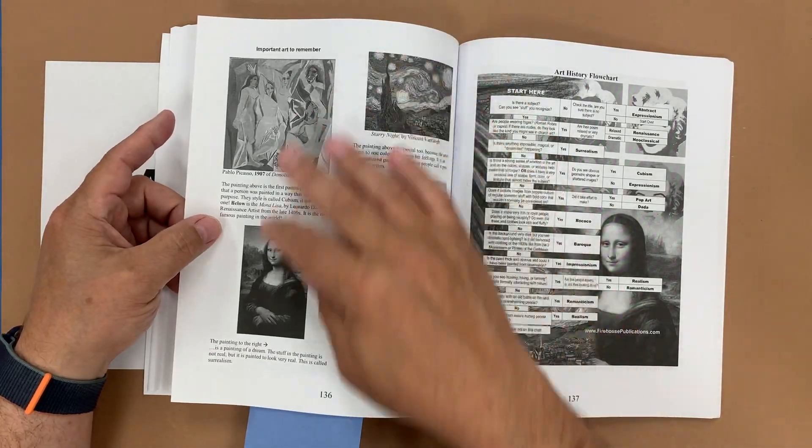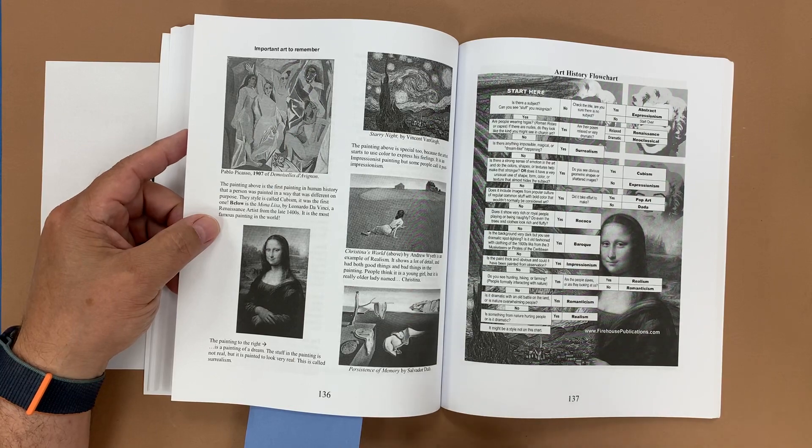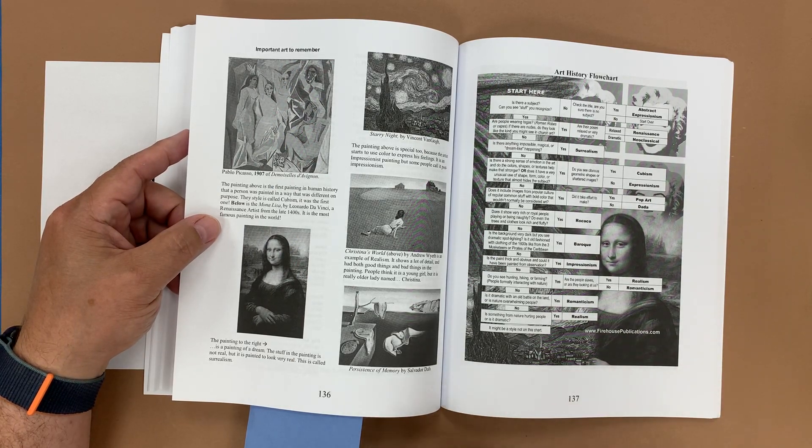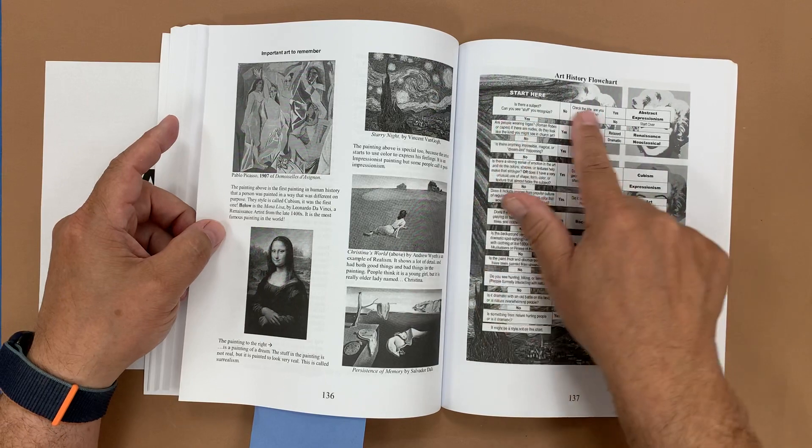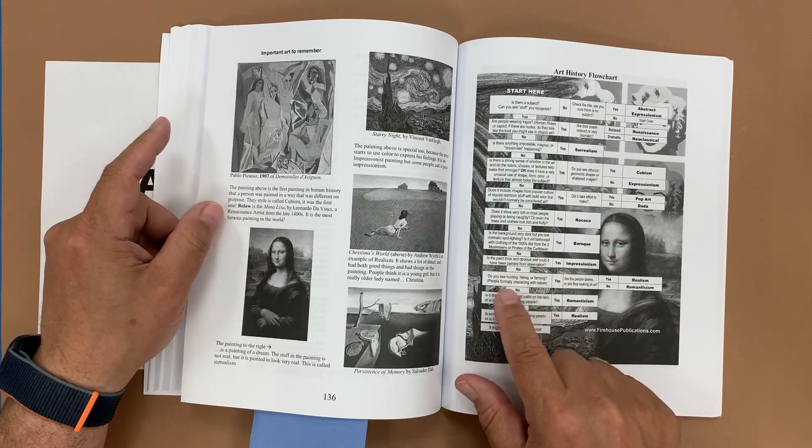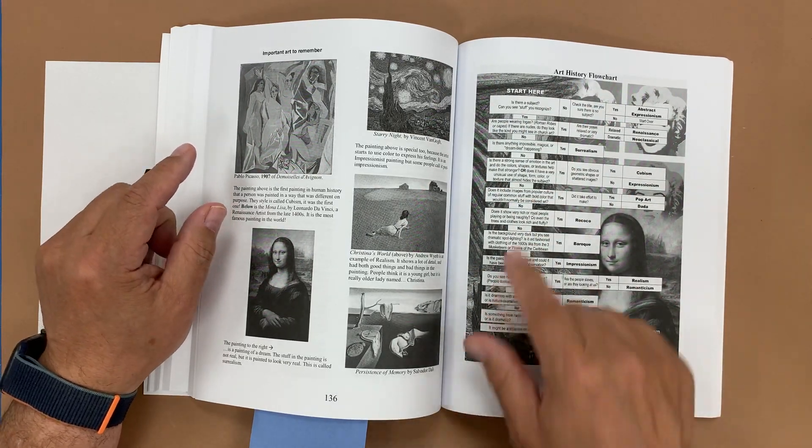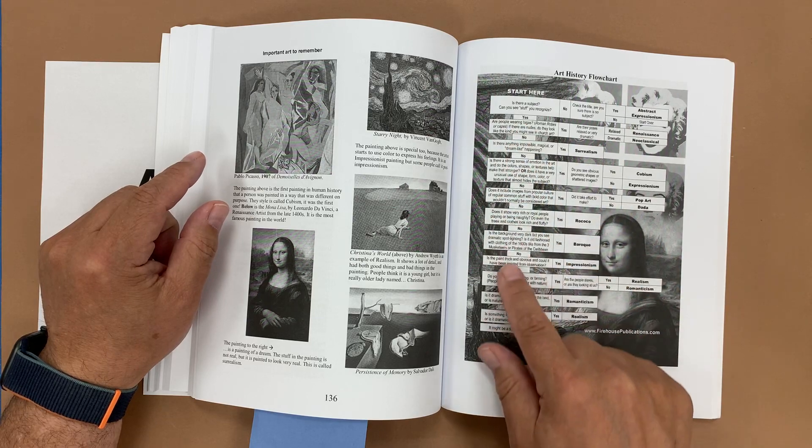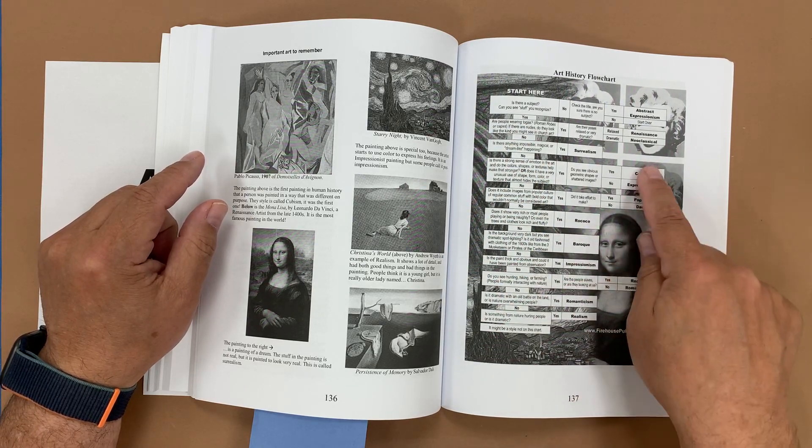Then we have five major pieces of art that I want every student to kind of know who did it, what it's about, that kind of thing. And we have a fun art history flowchart so you could put up a famous work of art and then answer the questions through the flowchart and end up with what school of art it is.